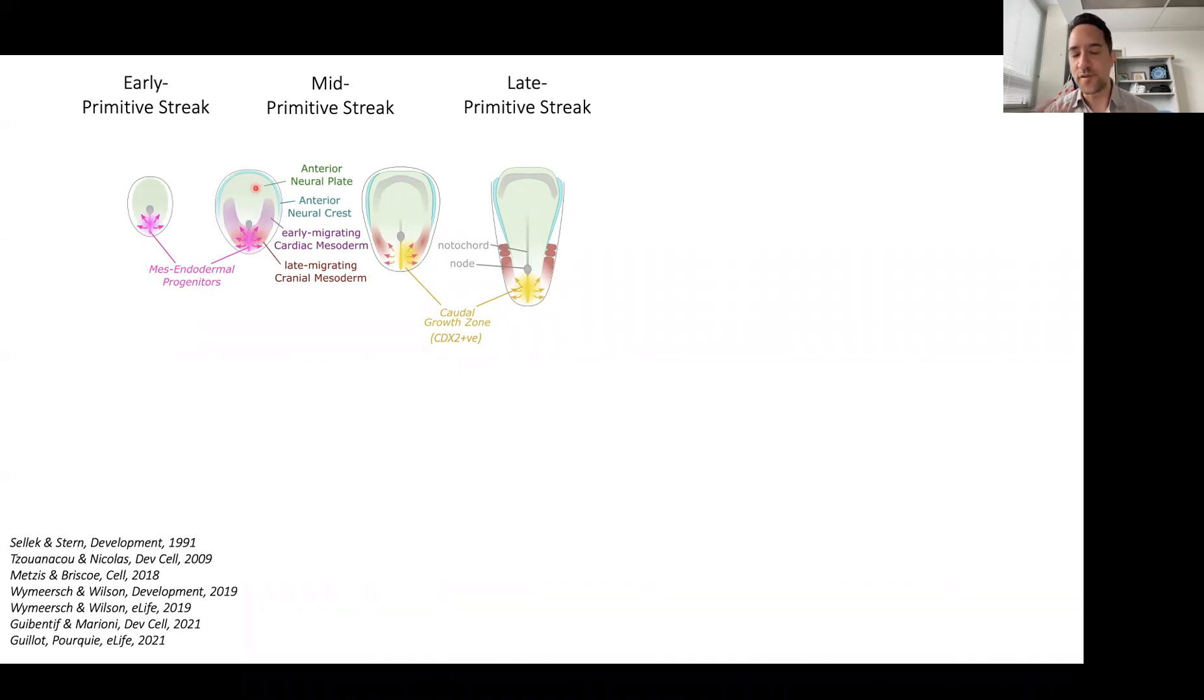Above that, the anterior neural plate will start specifying to become the forebrain, and at the border of the plate will emerge anterior neural crest cells.